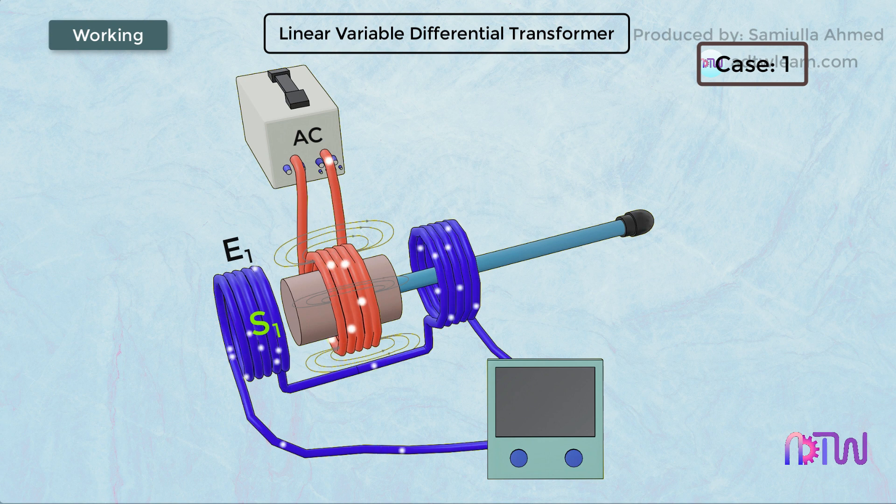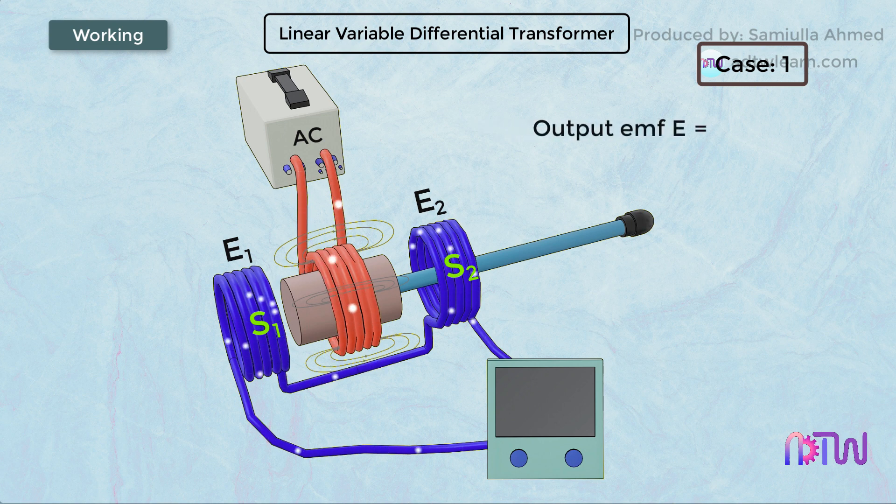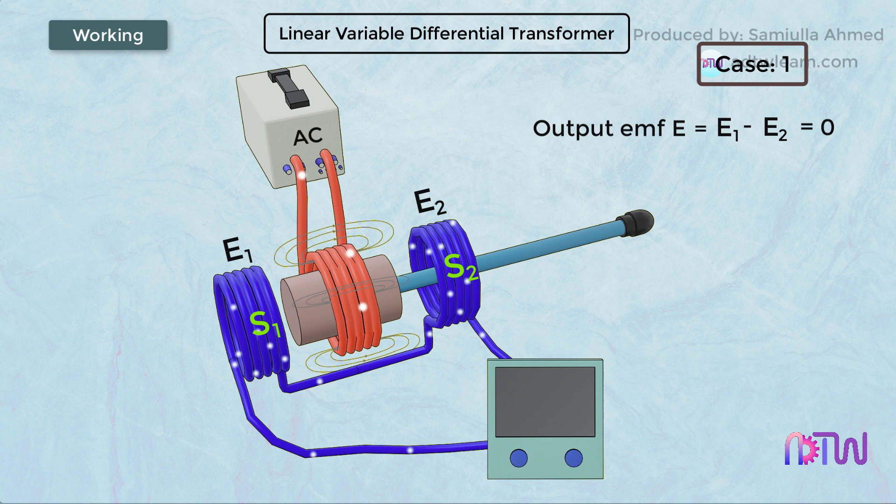That is EMF E1 in the secondary coil S1 and EMF E2 in the other secondary coil S2. Since the two coils are equal in turns but of opposite magnitude, therefore this EMF generated will cancel each other and the net EMF generated will be null. That is, output EMF E equals E1 minus E2, which will be equal to zero.